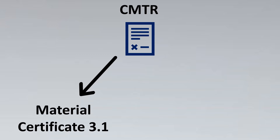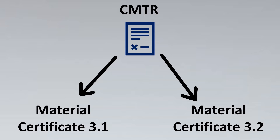The CMTR itself is divided into two things: Material Certificate 3.1 and Material Certificate 3.2. But what is the difference between these two?